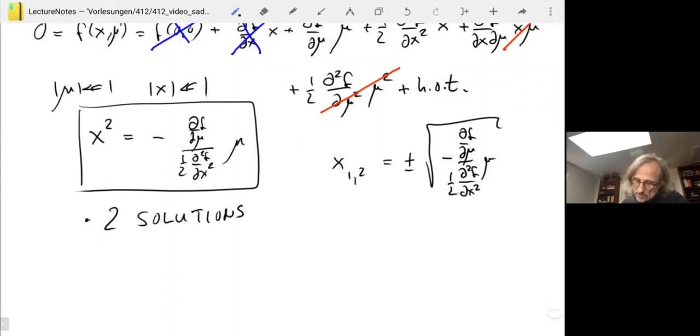So we see that we have two solutions, but only if the term inside the square root is actually positive. So on one side of mu equals zero, depending on the df by dmu and the d2f by dx squared, depending on the sign of that, the two solutions show up for positive or negative mu. So we have two solutions or none. The total number of solutions changes from zero to two, either by increasing or decreasing mu.